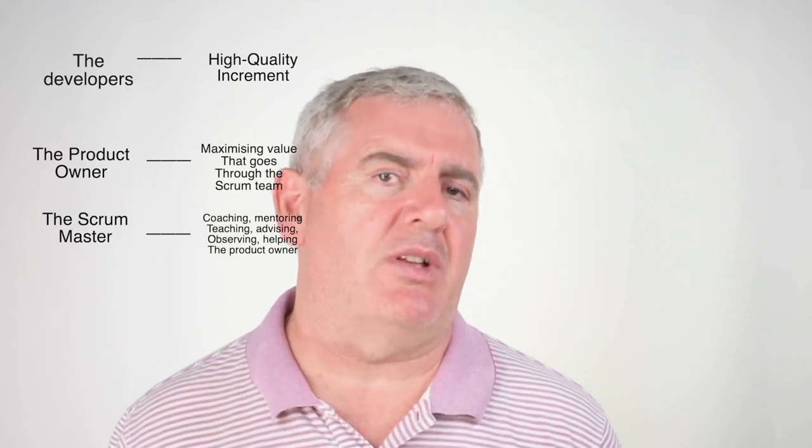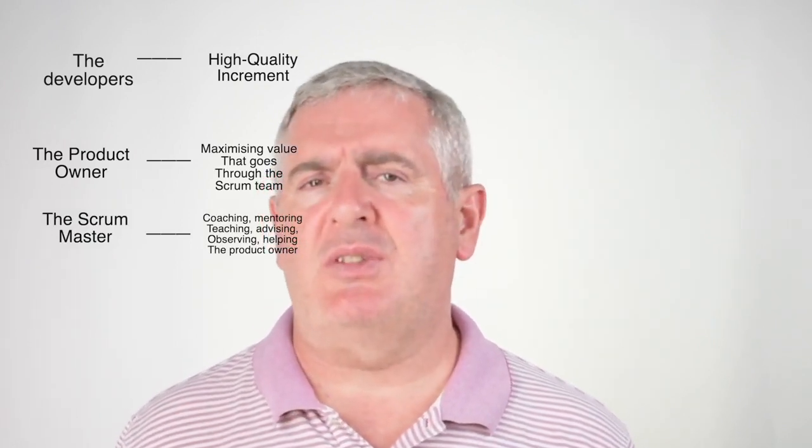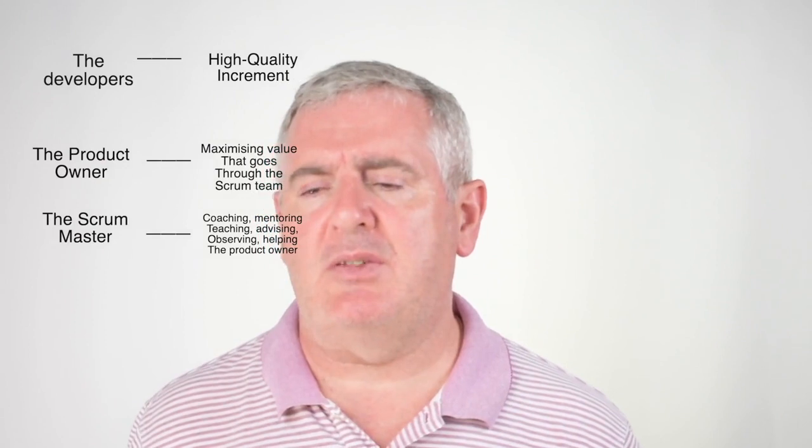The Scrum Master needs to be coaching, mentoring, teaching, advising, observing — helping people in all sorts of different stances — helping the Product Owner, helping the developers, but also helping the organisation so that the Scrum Team can be effective. That means sometimes the Scrum Master needs to go beyond the team, work with all the teams they depend on, work with other functions, help declutter processes and workflows, and even declutter the product — because sometimes there are too many features, and the product or service needs to be simplified to get more engagement from customers and end users.